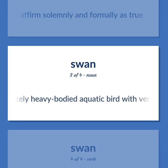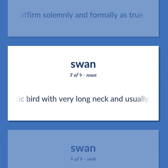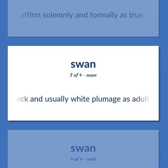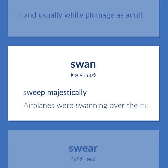SWAN: A stately, heavy-bodied aquatic bird with a very long neck and usually white plumage as an adult. Sweep majestically — airplanes were swanning over the mountains.